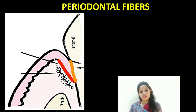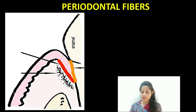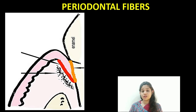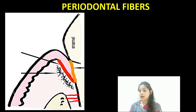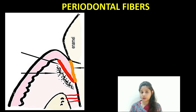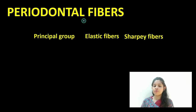Now let's discuss the periodontal fibers. These fibers are wavy in nature and present in the periodontal ligament space. Their major function is to anchor the root cementum to the alveolar bone, helping in tooth attachment while also permitting the movement of the tooth within the socket. Periodontal ligament fibers are classified into the principal group, the elastic group, and the Sharpey's fibers.